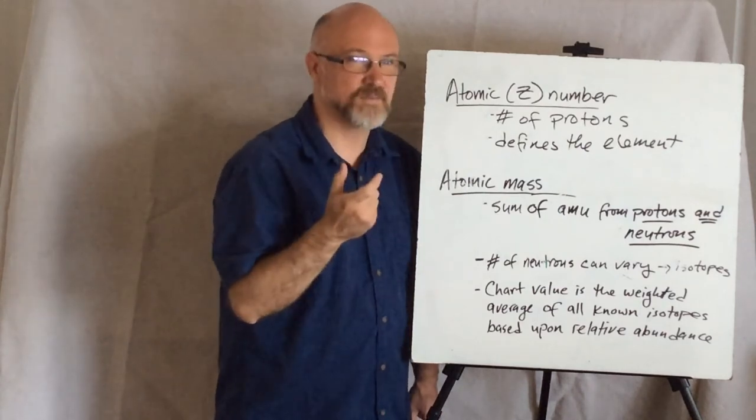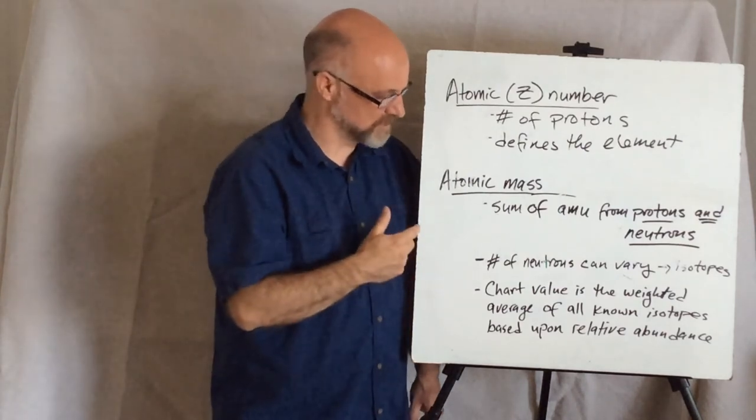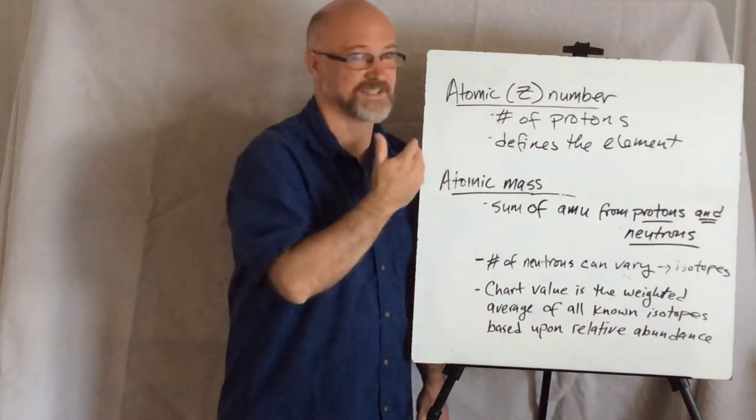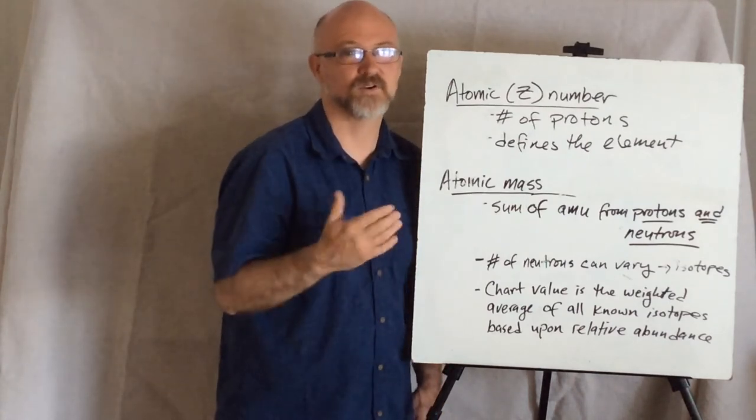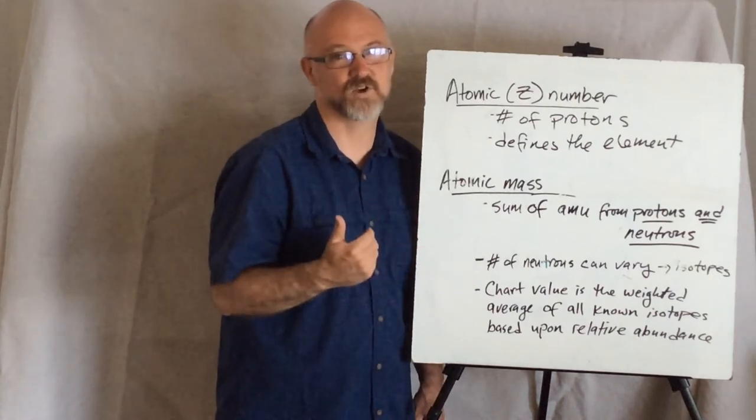So, iso means the same or similar. So, isotopes are atoms of the same element but they weigh different. Why do they weigh different? Because they have different numbers of neutrons.